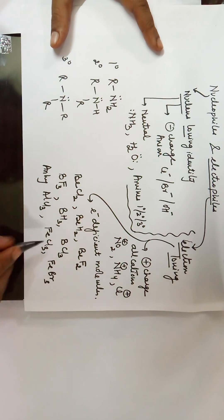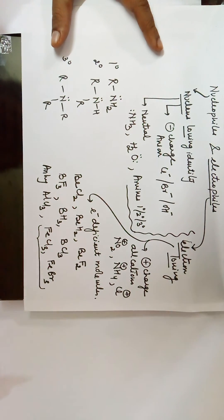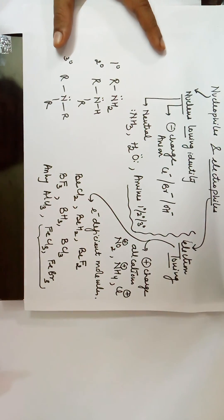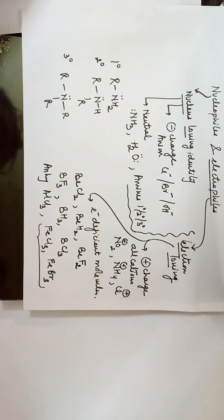A few more examples: ferric chloride and ferric bromide also fall under this category, as they are covalent compounds where iron is running short of electrons — making them electron-loving identities and hence electrophiles. With this we come to the end of the concept of nucleophiles and electrophiles, which are normally used in the mechanisms of organic reactions. Thank you.